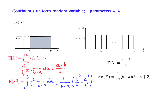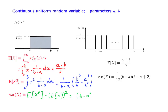Now that we have this quantity available, we are ready to calculate the variance using the alternative formula, which usually provides a quicker way to carry out the calculation. We take the E[X²] term and insert it, take the square of the mean term and insert it, carry out some algebra, and eventually find an answer equal to b minus a squared over 12. This is the formula for the variance of a uniform random variable. Taking the square root gives the standard deviation, which is b minus a divided by the square root of 12.